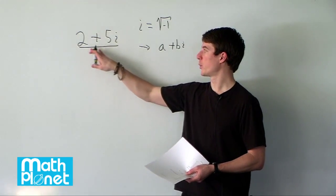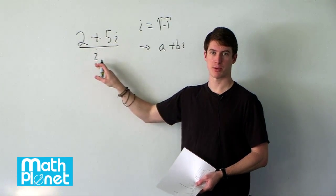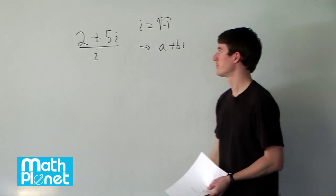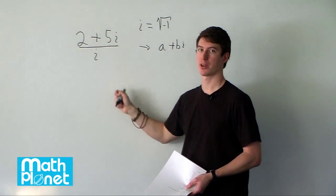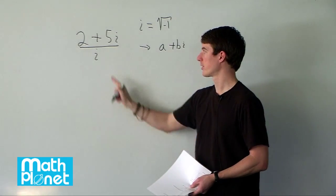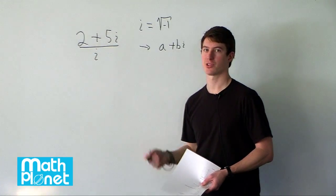So to do that we need to get rid of this imaginary number in the denominator. It's not so hard to do that. We simply multiply the top and the bottom by the conjugate of the denominator. The conjugate of i is just negative i.